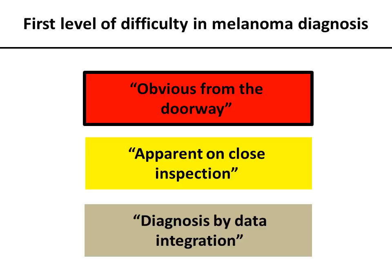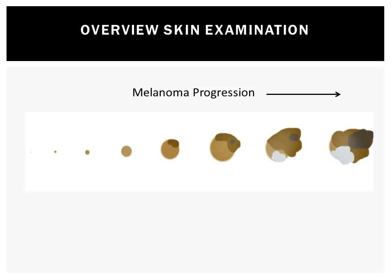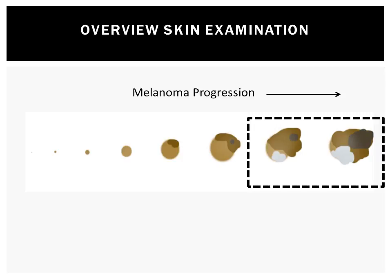Let's start with the first level of difficulty — the easy melanomas, obvious from the doorway. In this progression model, these would be melanomas that look like this, as we expect them to look based on morphology.